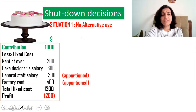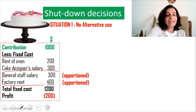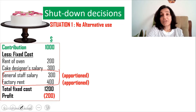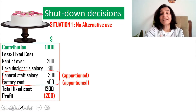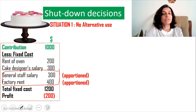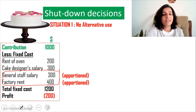It is easy to redraft the P&L. The only items to eliminate are the general staff salary and factory rent — simply because they will remain unchanged even if we close down the cake division. We are trying to find out what profit is exclusively related to the cake division.